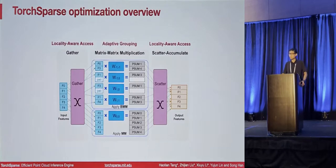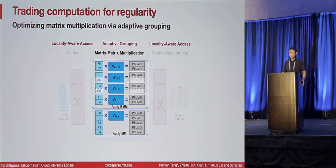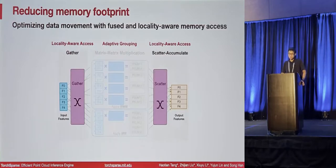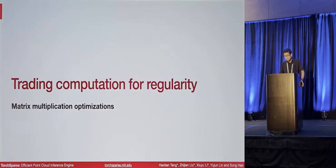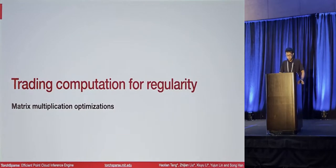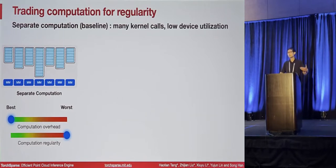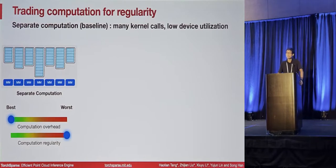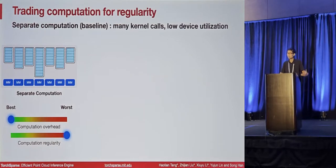For our optimization, we focus on two aspects. The first is optimization on matrix multiplication — we want to trade computation for regularity and improve device utilization via an adaptive grouping algorithm. Looking at the separate computation baseline in weight-stationary order, the problem is it has a lot of kernel launch costs. For a 3D kernel of size 3, we have 27 positions for the kernel offset, meaning we have to launch 27 matrix multiplication kernels. This usually leads to very low device utilization and very poor computation regularity.